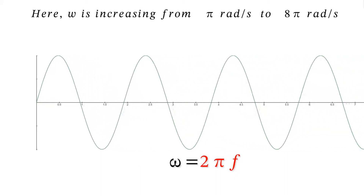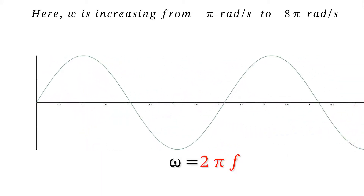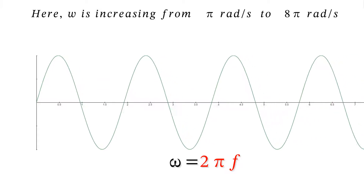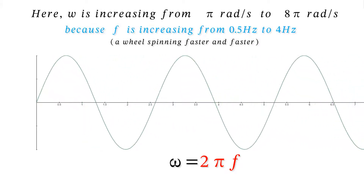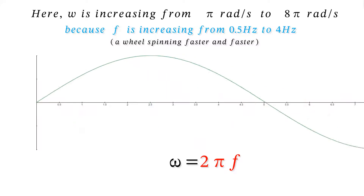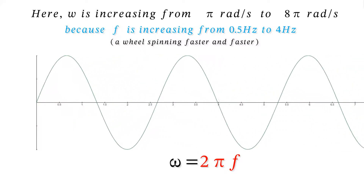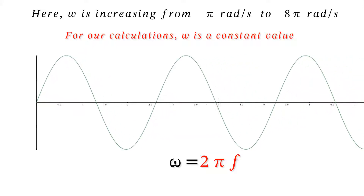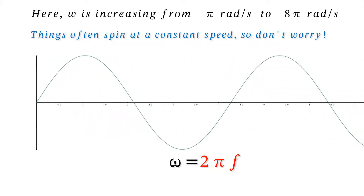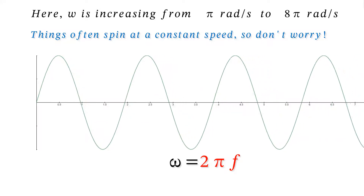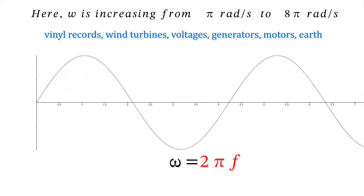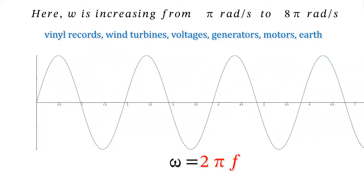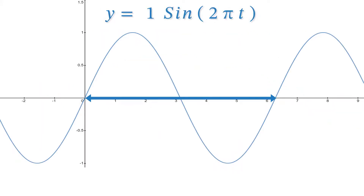Here omega is increasing because the frequency of spin is increasing, like a wheel spinning faster and faster. In real life, a lot of the time and for our calculations, omega is constant, and it's always equal to 2 pi f. Things like Earth's spin and Earth's orbit around the Sun are pretty constant. So y equals one sine omega t, which is just sine omega t.